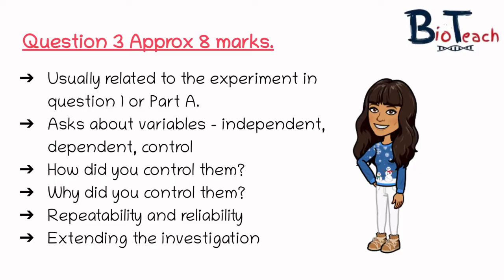It will ask you questions about how you controlled the variables, or if there were any variables that you didn't control or couldn't control, and why you controlled those variables and how that helped your investigation. In terms of repeatability and reliability, how could you improve your experiment from part A? The last part of the question is always asking you about how to extend the investigation. I wanted to show you some classic examples from past years so you can understand the common themes that arise.